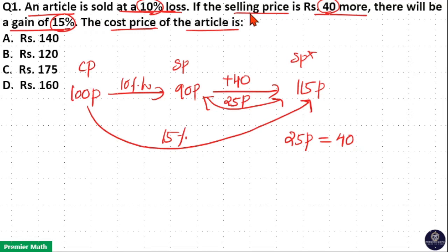Because if the selling price is Rs.40 more, there will be a gain of 15%. That is the difference between these two selling prices is Rs.40. But here it is 25 parts. So 25 parts is equal to Rs.40.